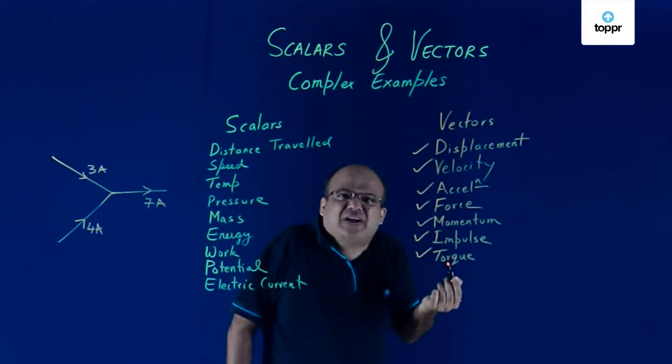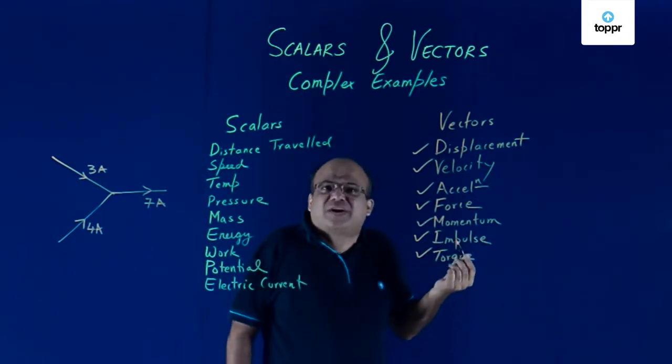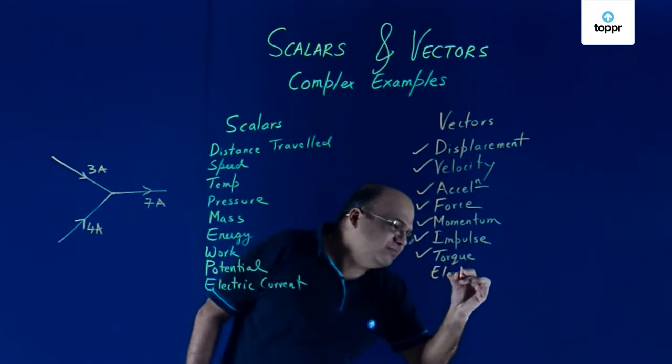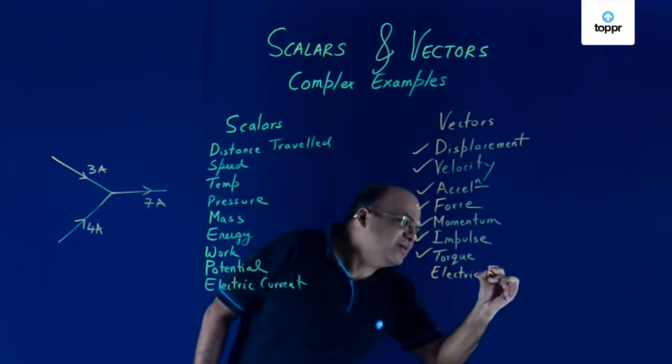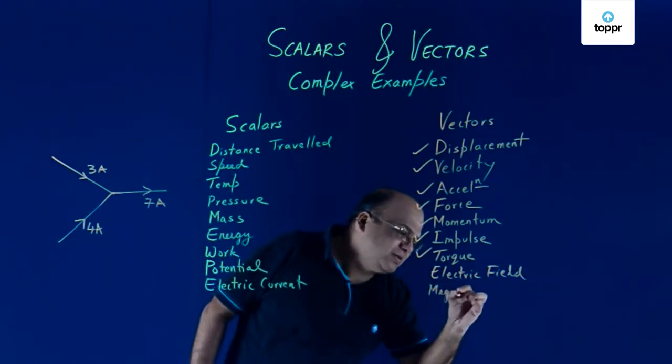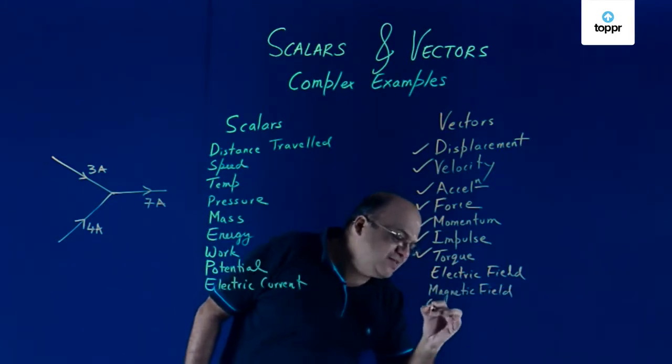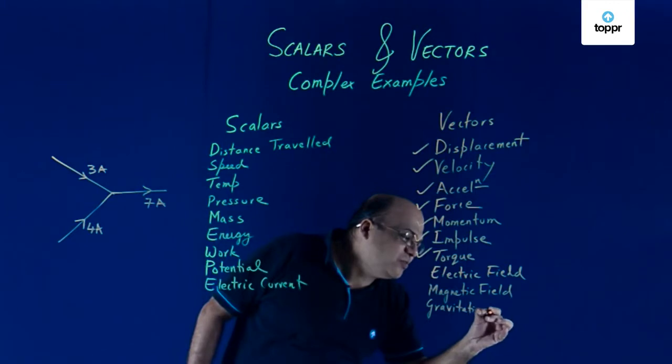Anything having the word field, that kind of physical quantity is a vector. Electric field is a vector. Magnetic field is a vector. Gravitational field is a vector. All these are vector quantities.